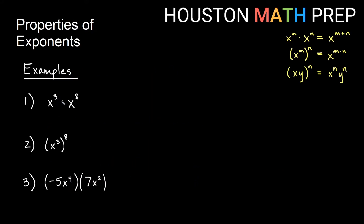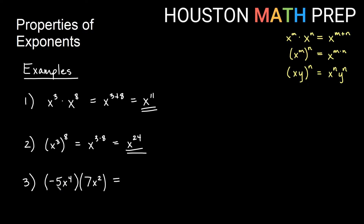Let's look at some examples. First, x cubed times x to the eighth — same base multiplying, so we add exponents: x to the 3 plus 8, which is x to the eleventh. Second, x cubed all to the eighth — exponent on an exponent, so we multiply: x to the 3 times 8, giving x to the 24. Third, negative 5x to the fourth times 7x squared: multiply the numbers to get negative 35, then add the x exponents to get x to the sixth. Answer: negative 35x to the sixth.